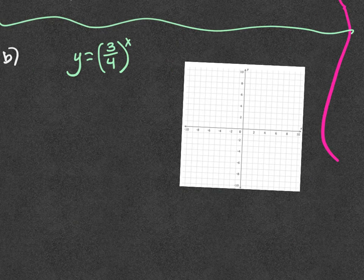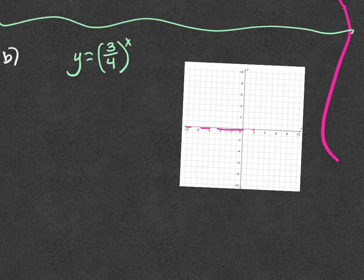Example B says y equals three-fourths to the x power. Is there a vertical shift here? No — which means the asymptote is at zero. So horizontal asymptote at y equals zero.